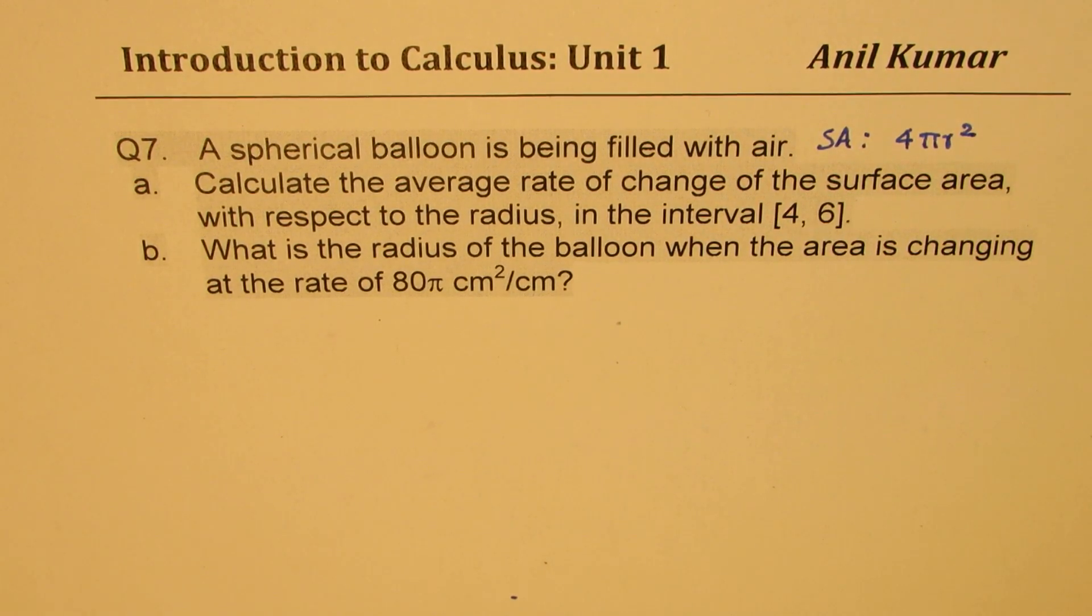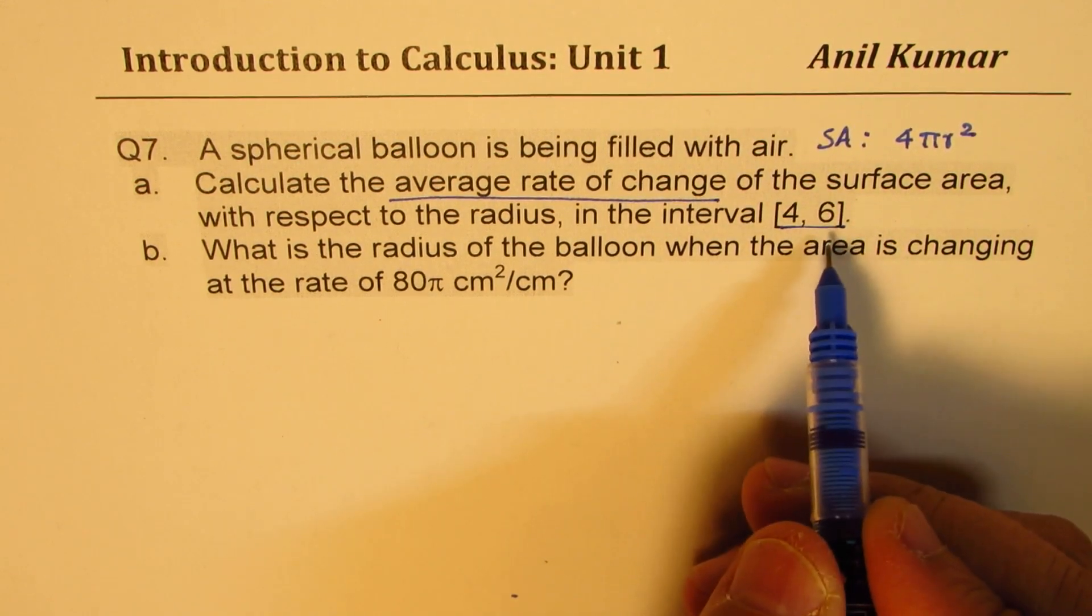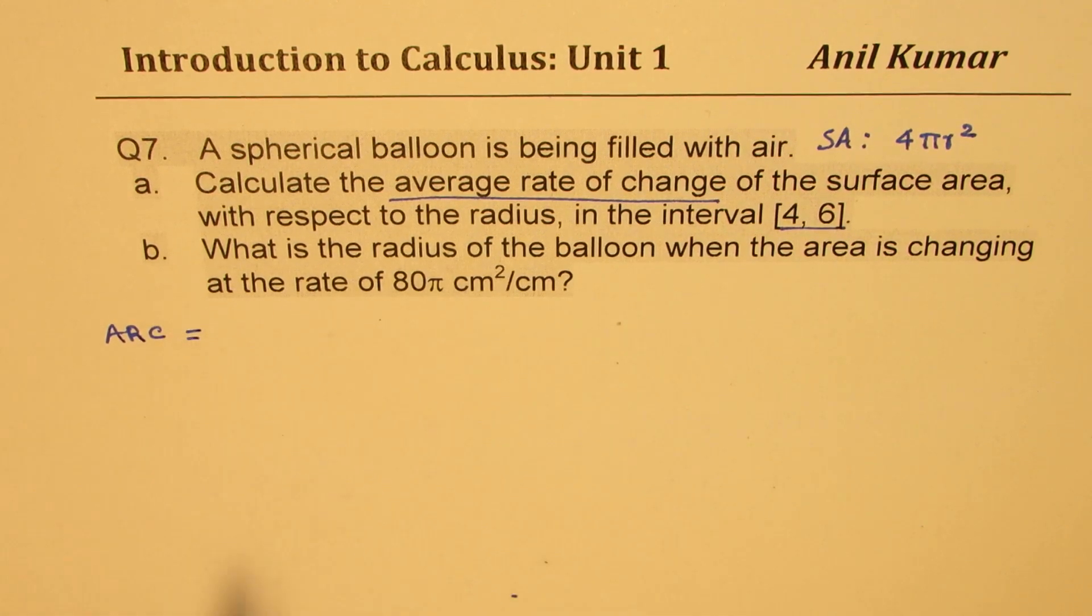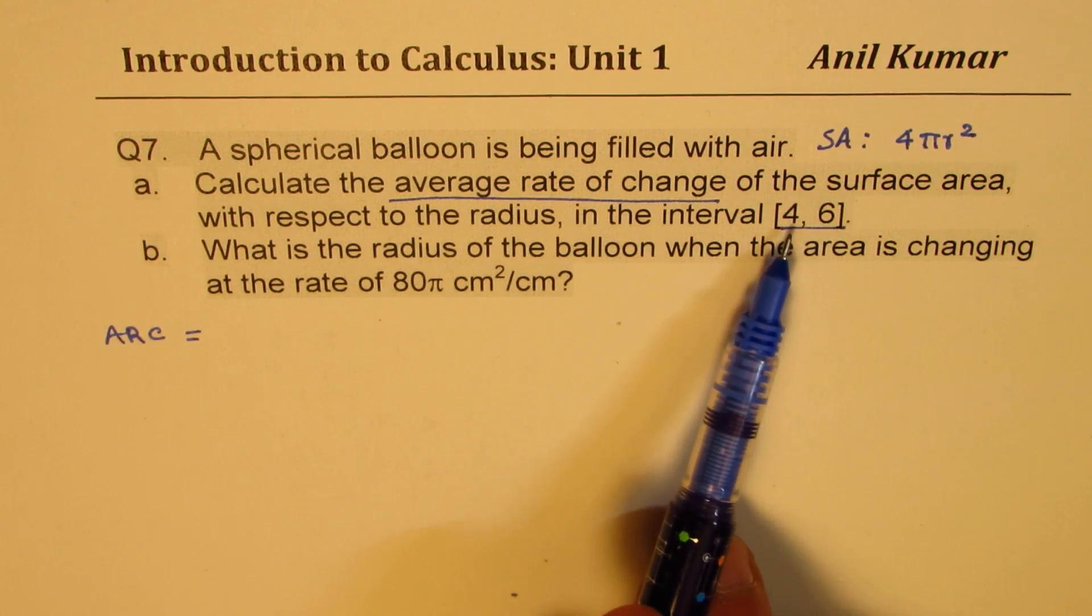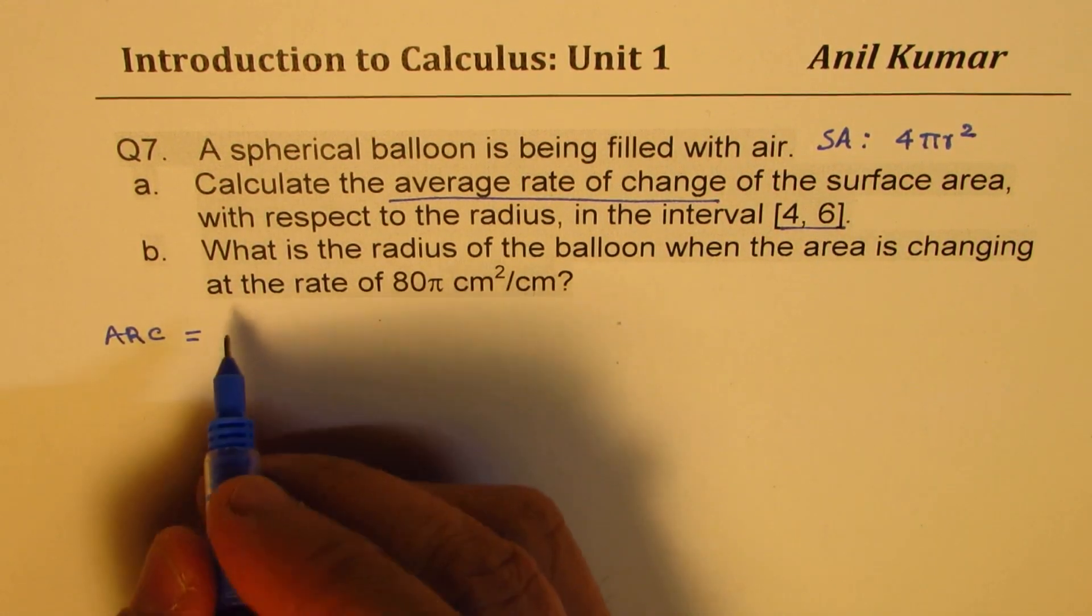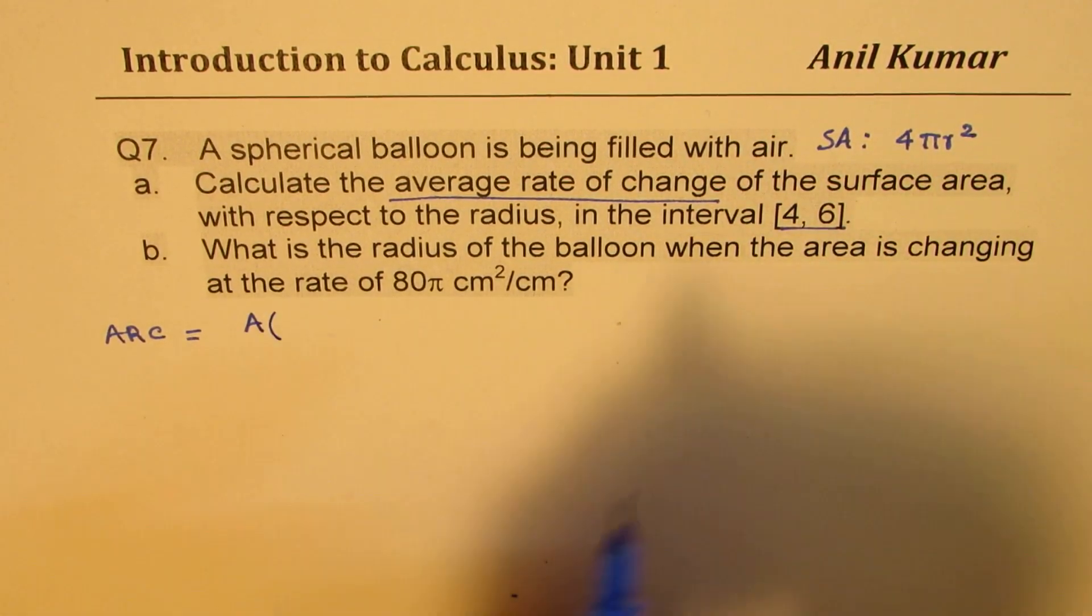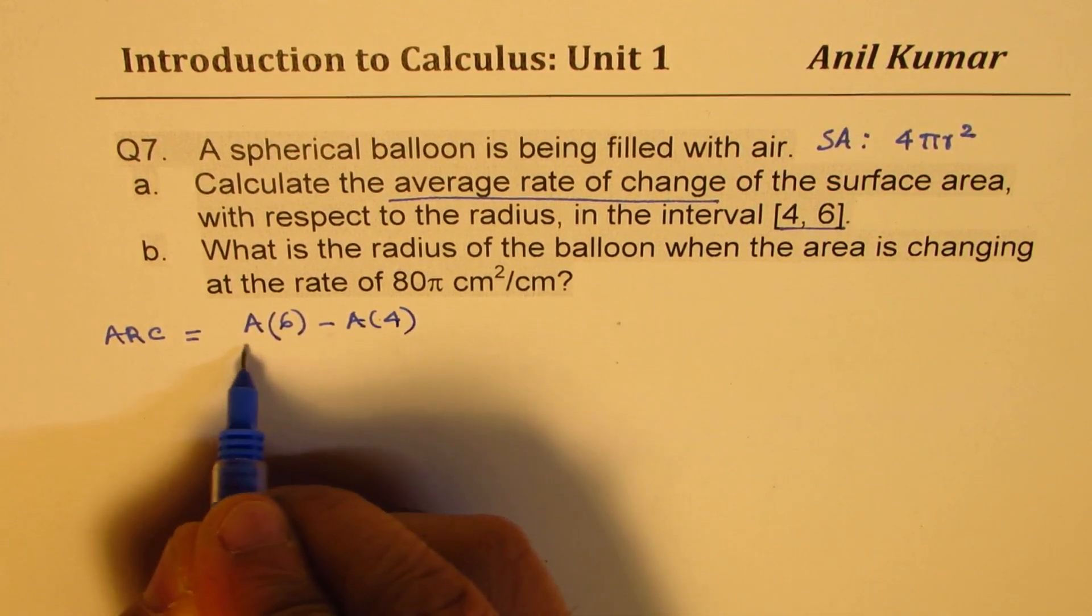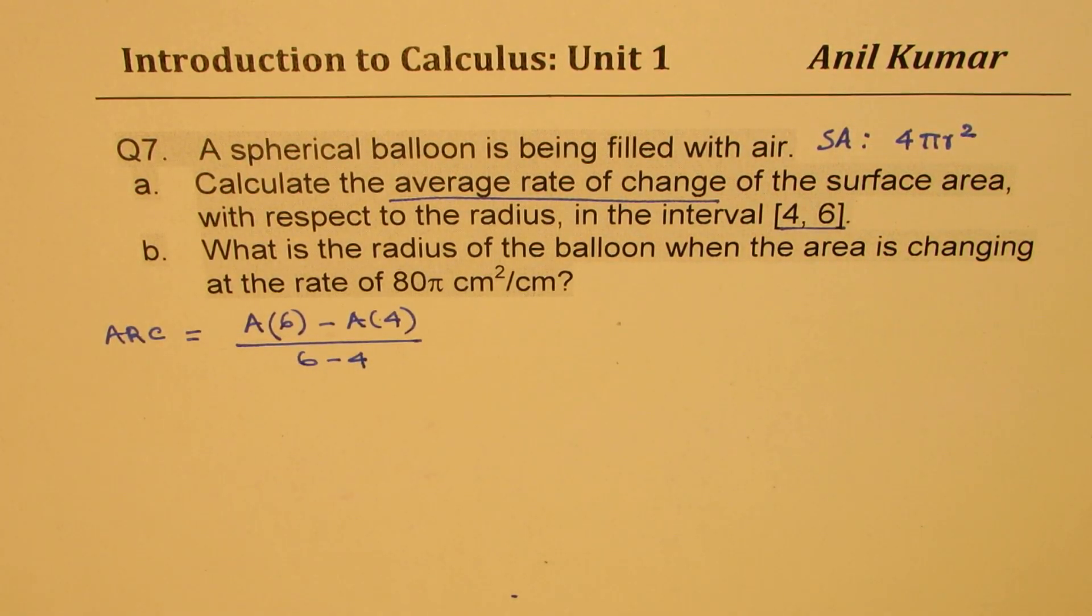So let's first find what is average rate of change from 4 to 6. Average rate of change basically is equal to A(6) - A(4) divided by 6 - 4. So basically we can say area A when the radius is 6 minus area when it is 4 divided by 6 minus 4. That is how we find average rate of change.